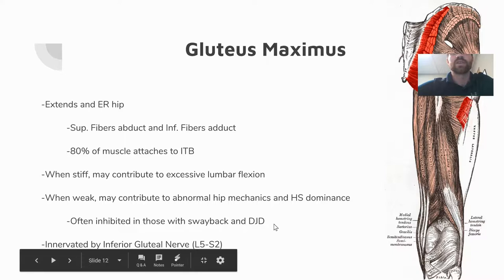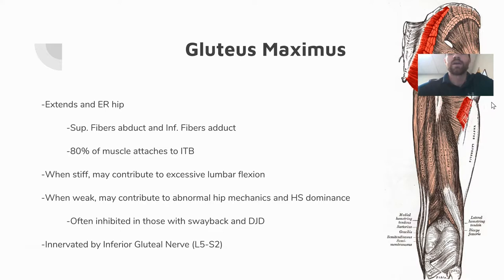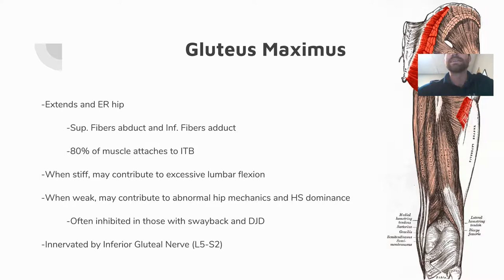The difference between inhibited and weak is important: when you improve neural input to an inhibited muscle, you can immediately see a change in strength; with true weakness, you cannot. A video will be added to the assessment portion covering this technique. If the muscle is inhibited, address the lumbar spine to improve neural input; if truly weak, specifically strengthen the muscle. The gluteus maximus is innervated by the inferior gluteal nerve.